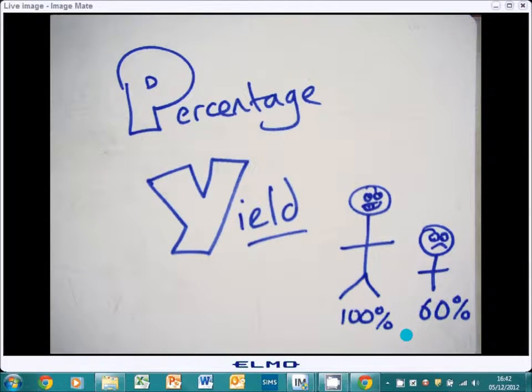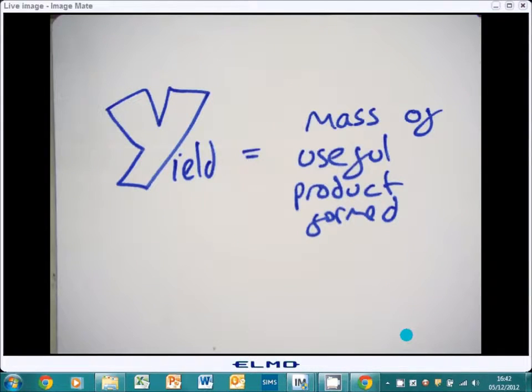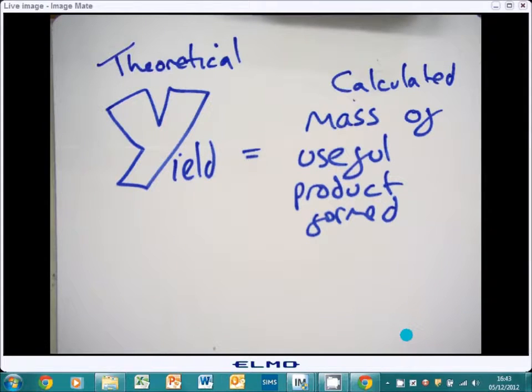So in the previous lesson where you worked out the theoretical yield, when you do a practical you'll always get less than that, and what you've got to be able to do is work out how close that percentage is to 100. So when we talk about yield, we're talking about the mass of a useful product that's formed. So the theoretical yield is the calculated mass of useful product formed, so what you should get.